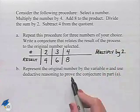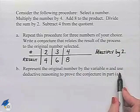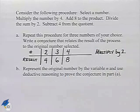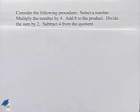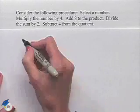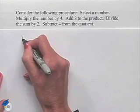Now, we want to represent the original number by the variable n and use deductive reasoning to prove the conjecture that we made. That is, that our result is just a multiplication by 2. So we're going to start again. This time, let's just select a number. The number I'm going to select is n.